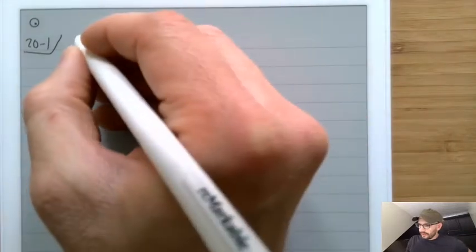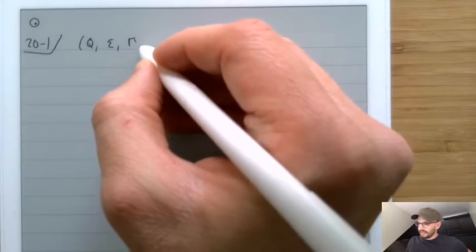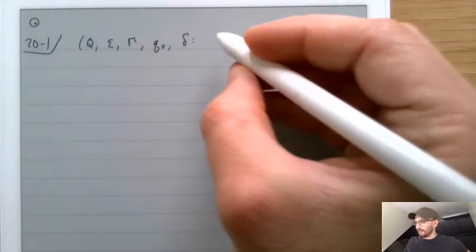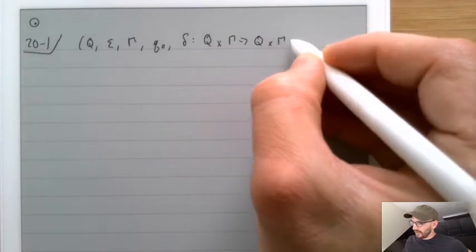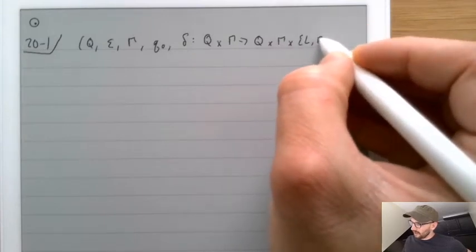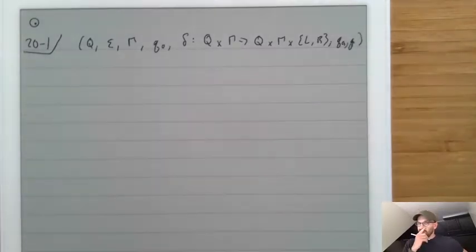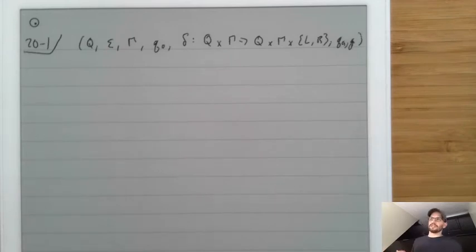We've talked about the basics of Turing machines, where a Turing machine has a set of states, an alphabet sigma, an alphabet for the tape gamma, a start state q0, and delta — a function that goes from q cross gamma to q cross gamma cross LR. We have the accept state and the reject state, where the Turing machine gets the input, walks across it, and eventually decides to go to the accept state or the reject state, at which point the machine returns.